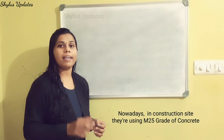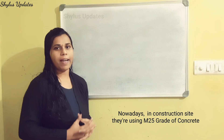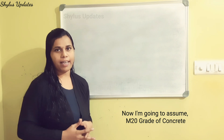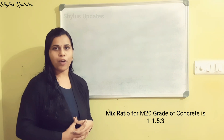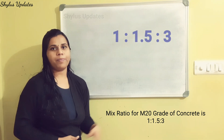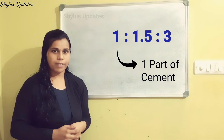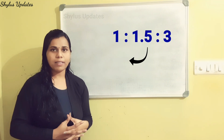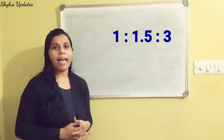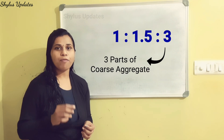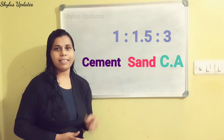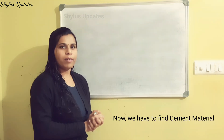Nowadays in construction sites they are using M25 grade of concrete. Now I am going to assume M20 grade of concrete. The mix ratio for M20 grade of concrete is 1:1.5:3, where 1 means 1 part of cement, 1.5 means 1.5 parts of sand (fine aggregate), and 3 means 3 parts of coarse aggregate.